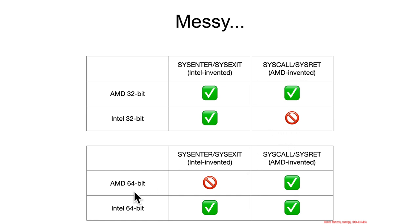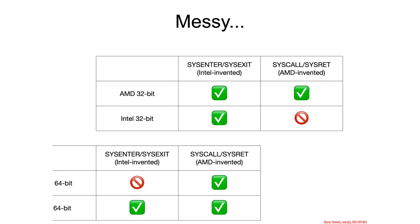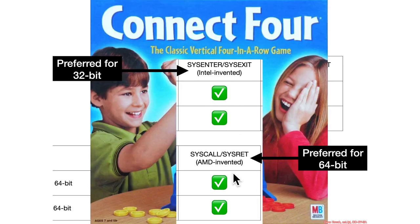Likewise, AMD having invented 64-bit syscall, they of course support it in 64-bit mode, but they don't support the 64-bit extended version of sysenter which Intel made later. Basically AMD made their own and didn't just extend sysenter, so they don't support that whereas Intel does. So basically what we have is: for 32-bit it is preferred to use sysenter, and for 64-bit it is preferred to use syscall.